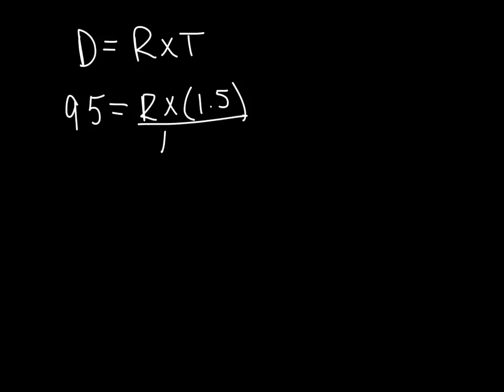Now we have to use our simple formula: distance equals rate times time (D=R×T). All you do is plug in the values we know. The distance is 95 miles and the time is one and a half hours. We don't know the rate, so times 1.5 hours.